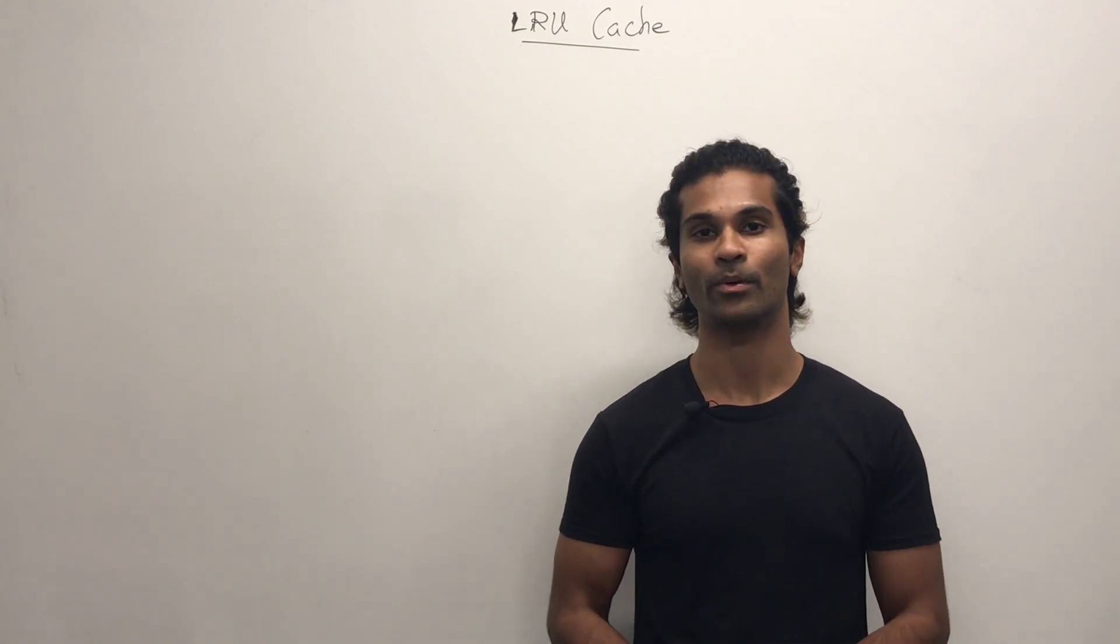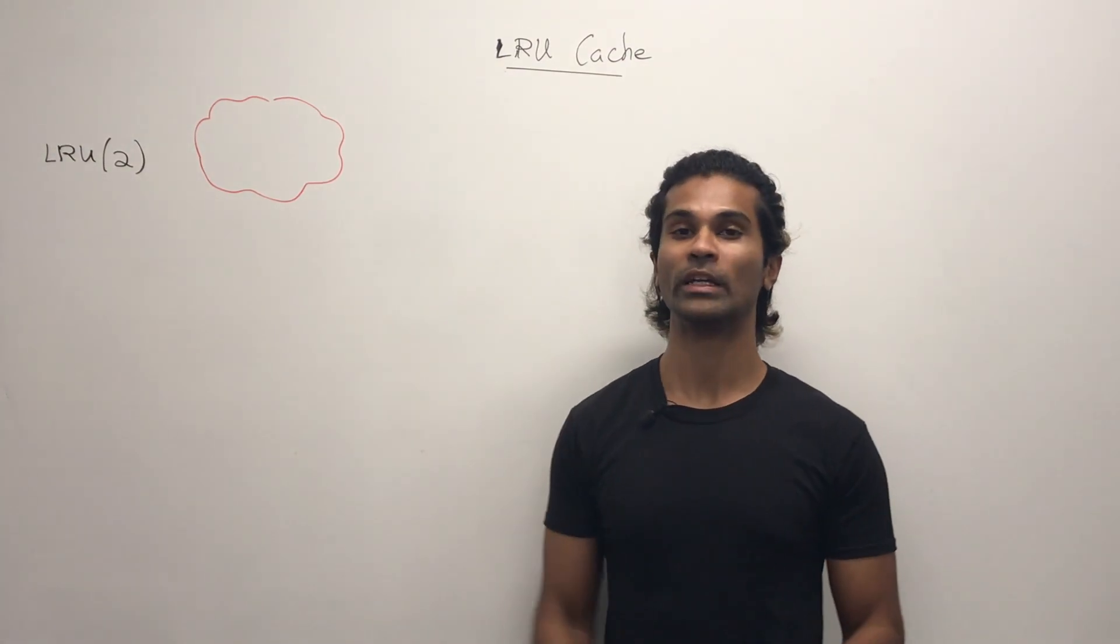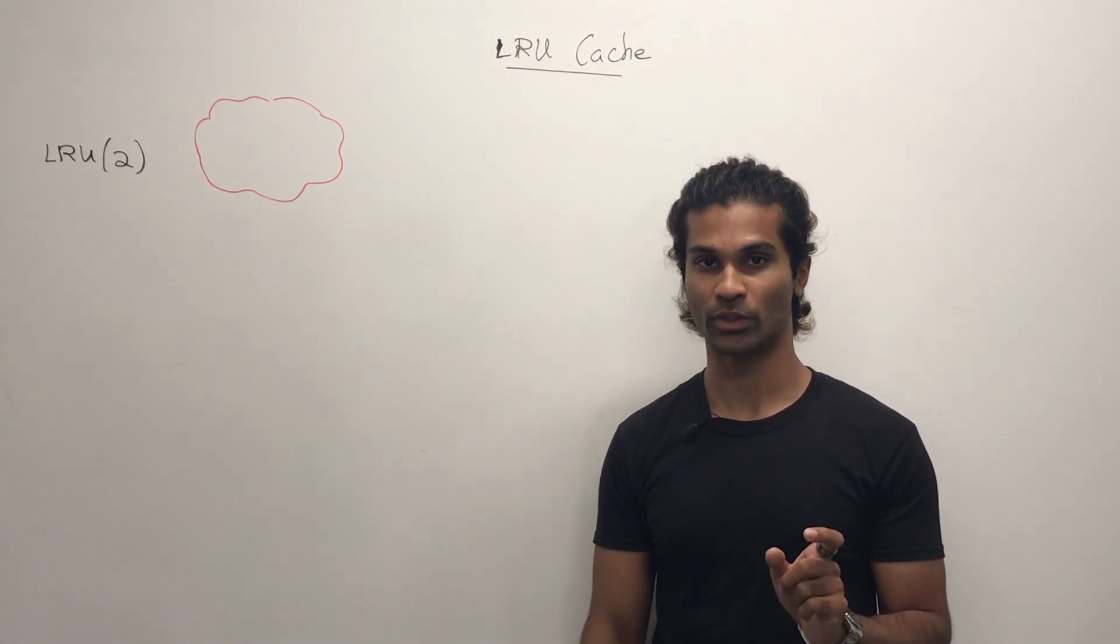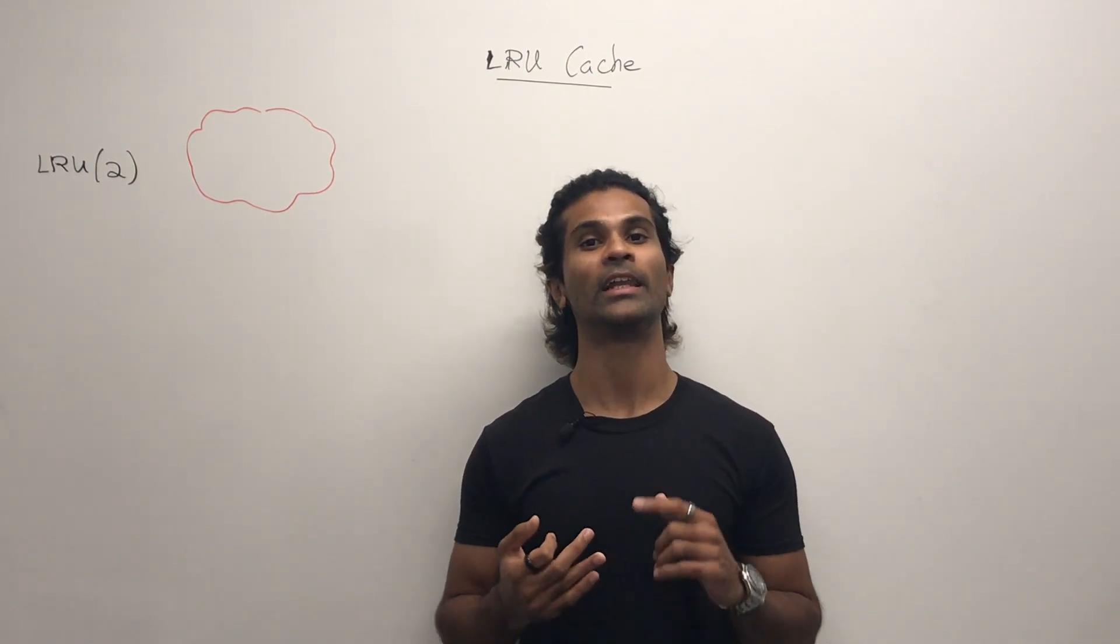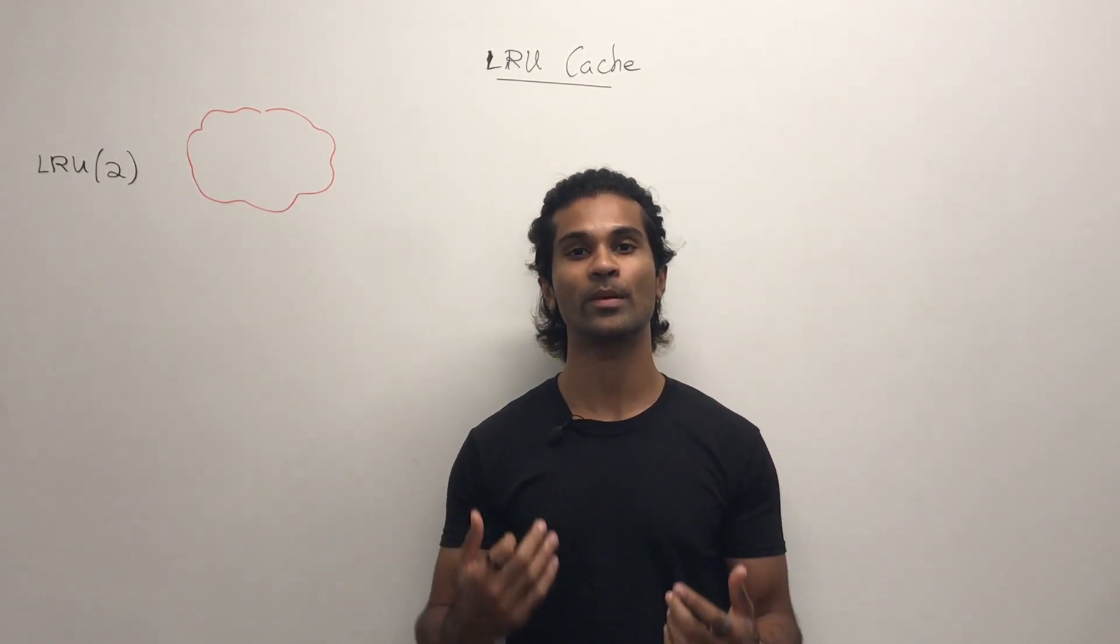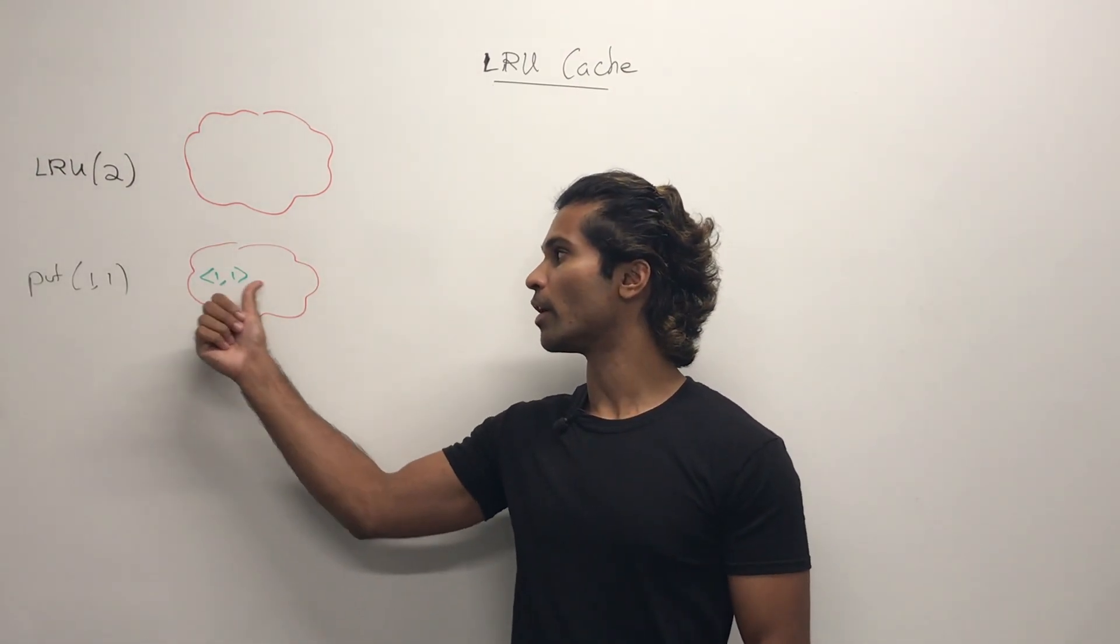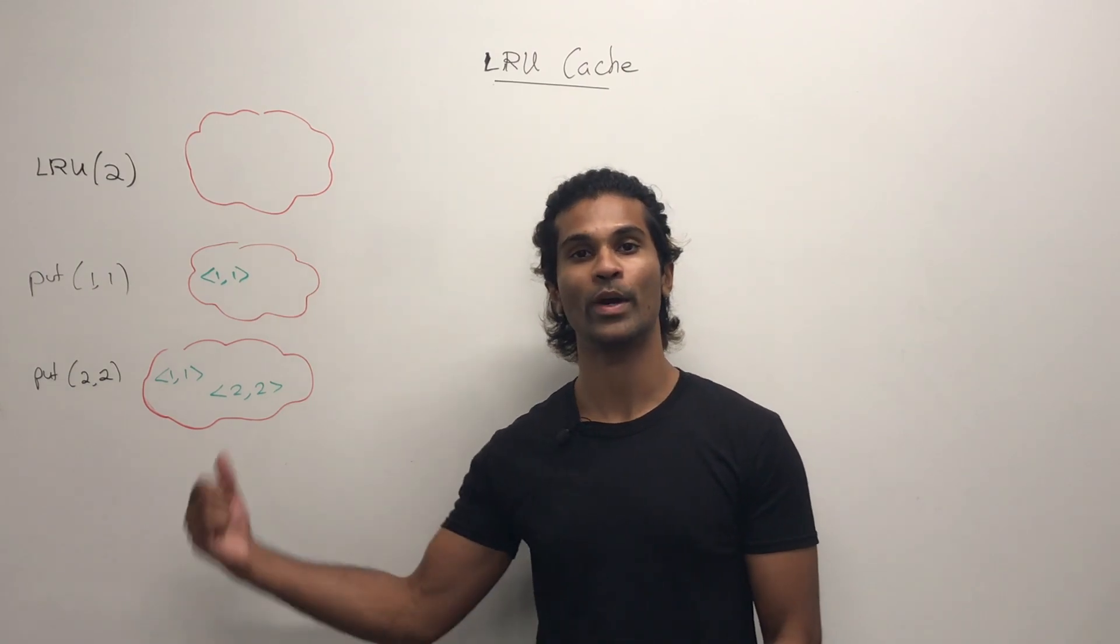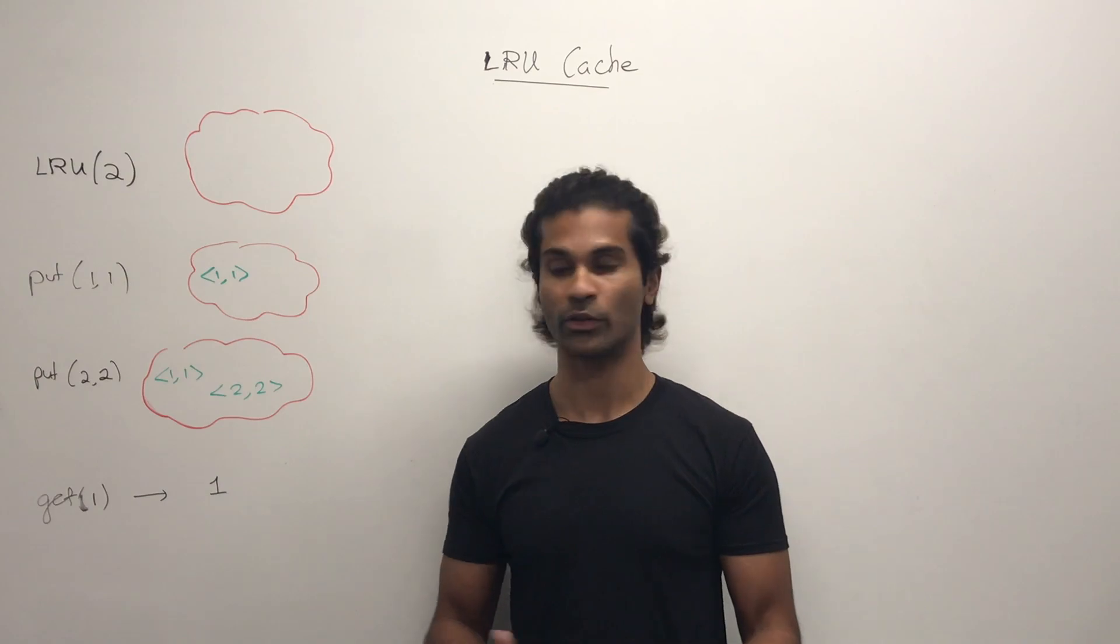Let's look at an example. I've initialized our LRU cache with a capacity of two. So we can only have two entries at most. Our LRU cache is going to support get and put in constant time complexity, similar to a hash map. When we call put for 1,1, we have a key value pair in our cache. We call put of 2,2, and we have another entry. When we call get of 1, we return the corresponding value of 1.